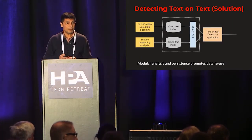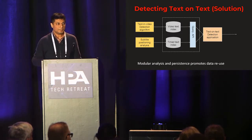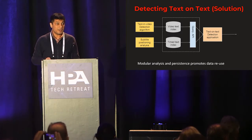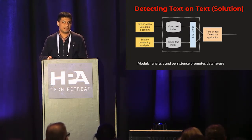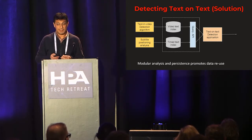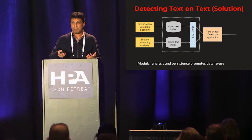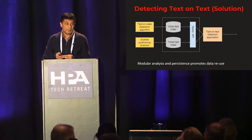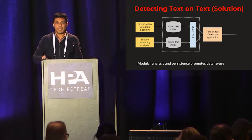Going back to the text-on-text detection problem, a modular way to solve it might be to do text-in-video detection analysis on your video, and independently run a subtitle positioning analysis. Both analyses can proceed independently and be persisted separately. The actual text-on-text detection application can combine the outputs of these analyses to produce its desired outcome. Such a modular approach allows for data reuse — for example, text detection data can be used for artwork problems. Since many of these analyses are computationally intensive, making recompute expensive, this makes an argument for a data system that can store any media analysis we compute. In other words, we need a media database.